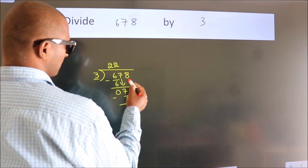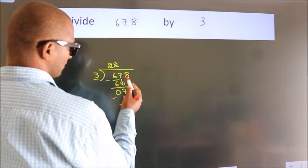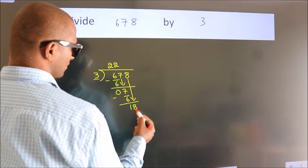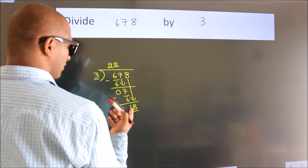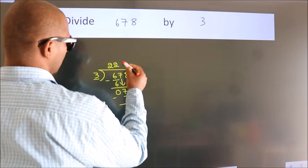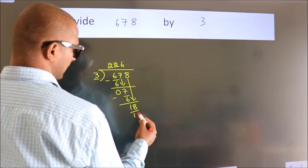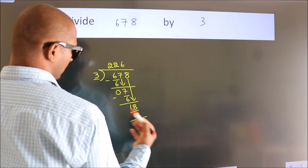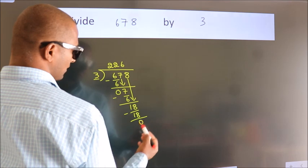After this, bring down the beside number. So, 8 down. So, 18. When do we get 18? In the 3 table, 3 times 6 is 18. Now we subtract. We get 0.